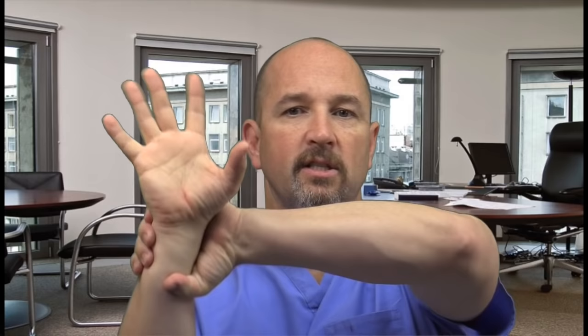The vagus nerve's job is to slow down the heart — it's parasympathetic. Think of it as a leash on a pit bull. The vagus nerve pulls down and the heart is submissive. If you cut or block the vagus nerve, the heart speeds up — that's atropine. If you stimulate the vagus nerve, either through adenosine or vagal maneuvers, it's going to slow down the heart.